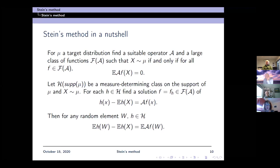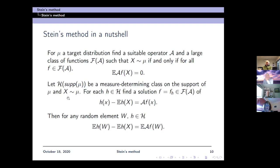In the normal case, this was the expectation of f prime of x minus x f of x, which is operator A of x, but we could think of other operators. And then we have a class of test functions h, which are defined on the support of the target distribution, and we want them to be measure determining. We find a solution of this Stein equation: h of x minus expectation h of x equals A f of x. The solution is f, which will depend on h.